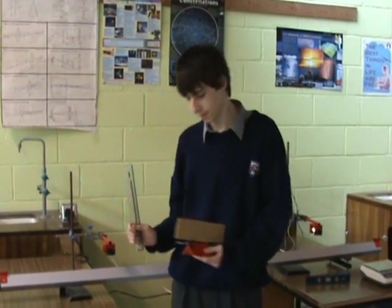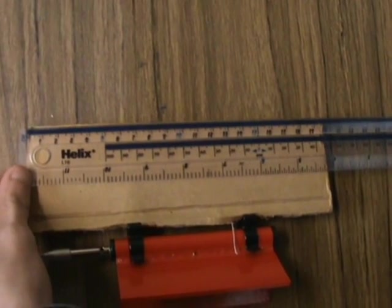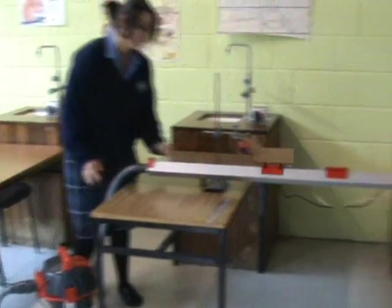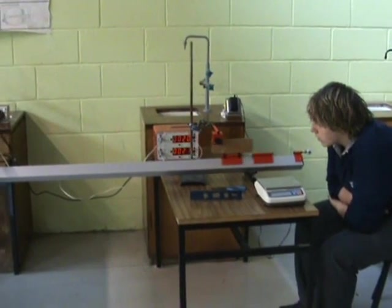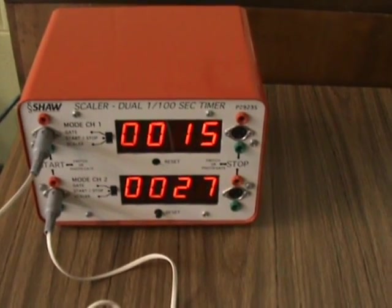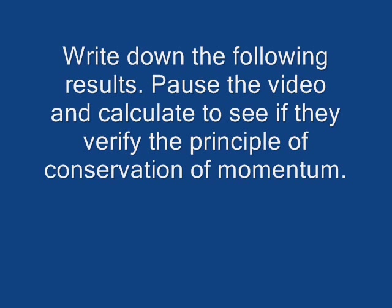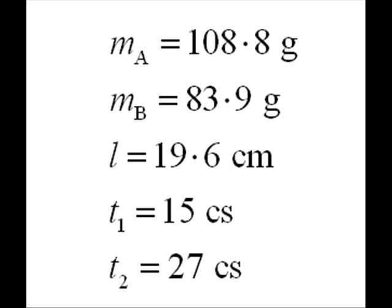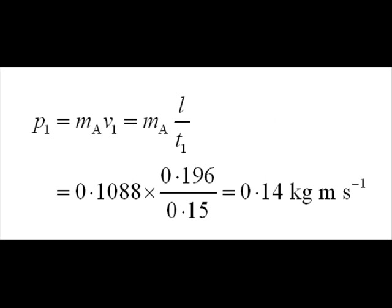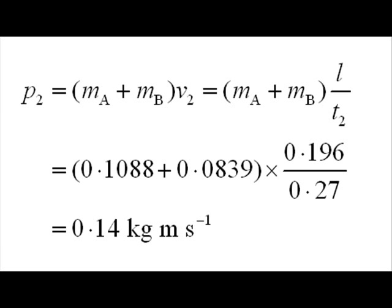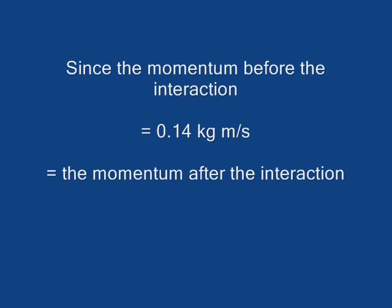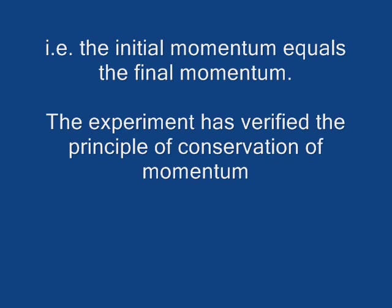Now to get the length of the card. L equals 19.6 centimeters. T1 equals 15 centi-seconds. T2 equals 27 centi-seconds.